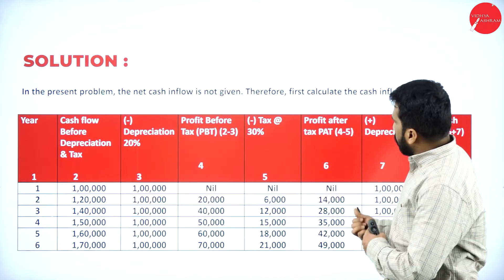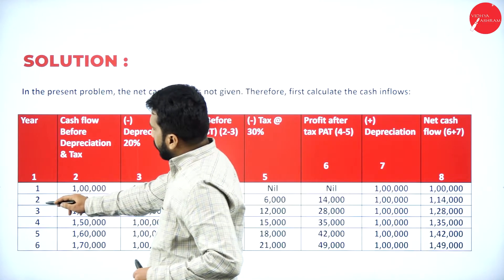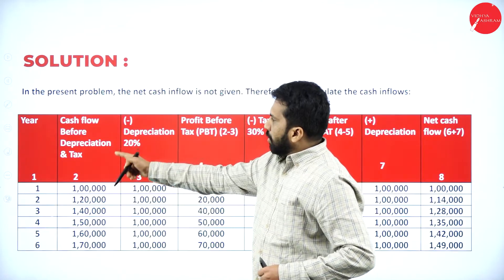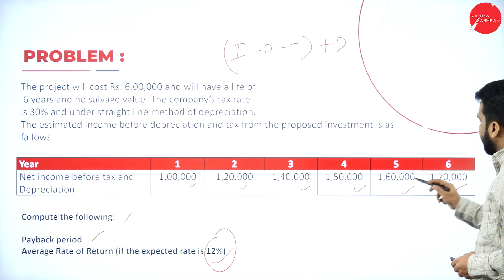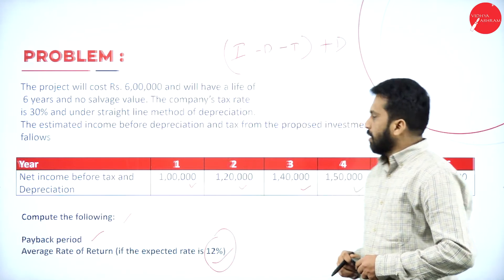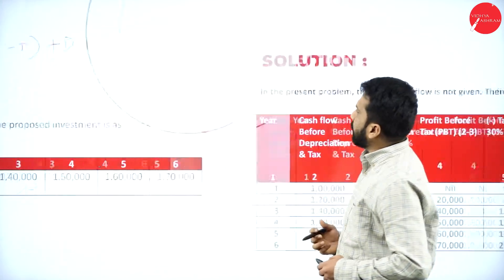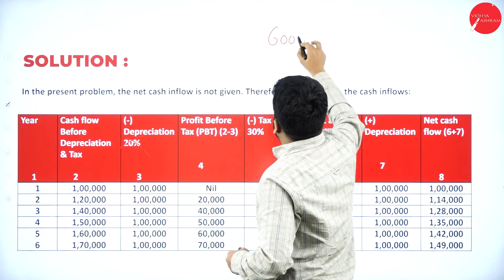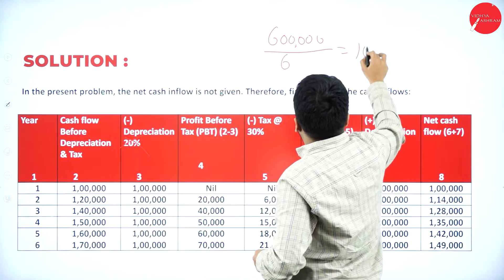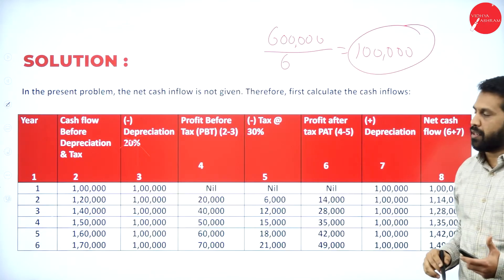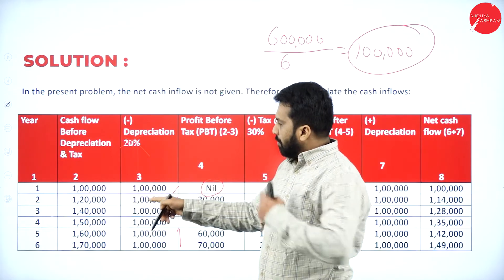Now we calculate total net cash flow. We have six years. Cash before depreciation is already given. Depreciation is calculated as: project cost six lakh divided by six years equals one lakh per year for all years. So one lakh minus one lakh is nil; one lakh twenty thousand minus one lakh is twenty thousand; then forty thousand, fifty thousand, sixty thousand, and seventy thousand respectively as profit before tax.